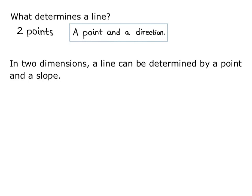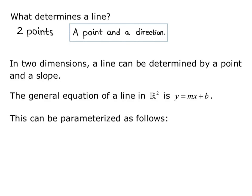In two dimensions, a line can be determined by a point and a slope. The general equation of a line in R2, so in two dimensions, is y equals mx plus b. This can be parameterized as follows. So we're going to use a parameter t, so we'll say x equals t, so then y equals mt plus b. This is called a parametrization of the line, and t is called the parameter.